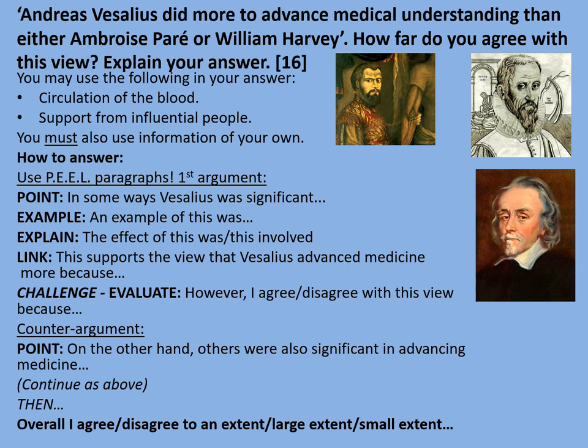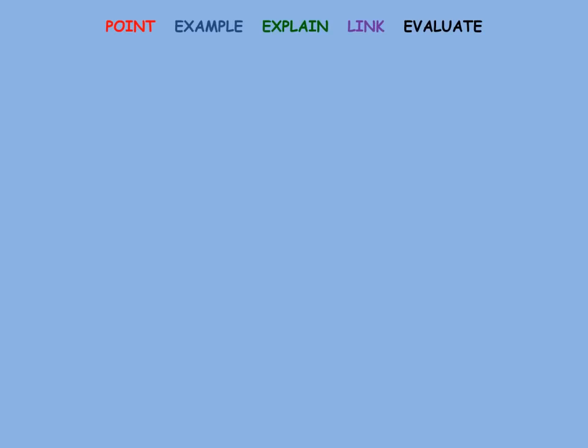Here's an example answer — not perfect, but one way you might approach this question. I'll highlight the PEEL structure using colours: points in red, examples in blue, explanations in green, links back to the question in purple, and evaluations in black. First section: 'In some ways, Vesalius was very significant in bringing medical progress. For example, Vesalius was able to use human dissection to learn more about the body. Before Vesalius, human dissections were rare, meaning many of Galen's mistakes from dissecting animals were repeated and not challenged. This supports the view that Vesalius was more significant than Paré and Harvey, because both would have benefited from his earlier anatomical work.'